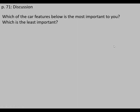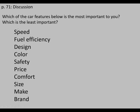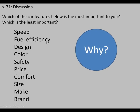Now, let's think about this together. Think about some car features — they will be listed here. Which of the car features is the most important to you, and which is the least important? The features are: speed, fuel efficiency, design, color, safety, price, comfort, size, make (which country the car comes from), and brand — Honda, Ferrari, Fiat, Toyota. When you answer this question, you should explain why, always supporting your idea with an explanation or example.